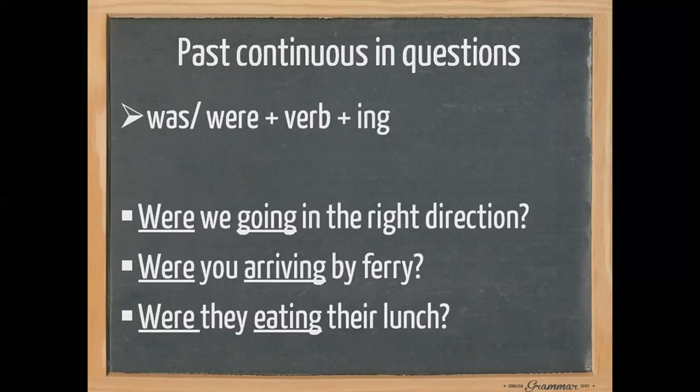And the last one: were they eating their lunch? 'Were' plus 'they', plus 'eat' base form plus '-ing': eating their lunch, the complement, then we add the question mark. So according to the rule, 'was' or 'were' in the beginning of the question, then we add the subject, then the verb in base form plus '-ing', then the complement, then the question mark.